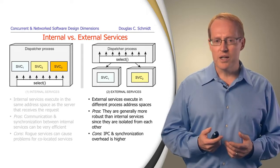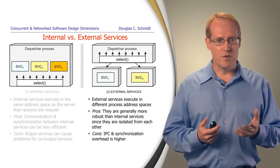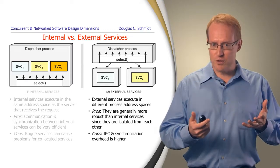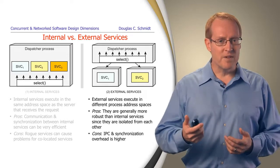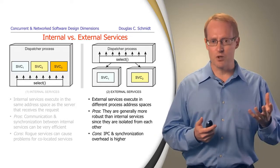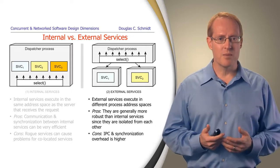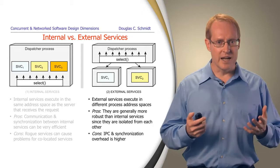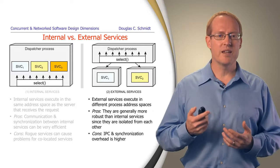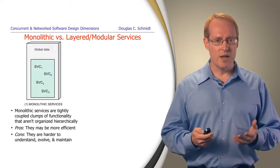An alternative approach is to implement external services. In this model, the service runs in a different address space from the dispatcher that received the request. The benefit is isolation and separation of concerns — if something goes wrong in one external service, it will be protected from another service executing simultaneously in a different process. The downside is that if the services have to interact with each other, inter-process communication and synchronization overhead will be higher.